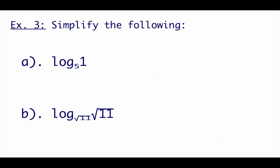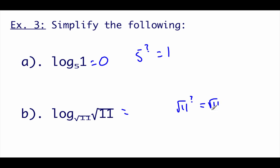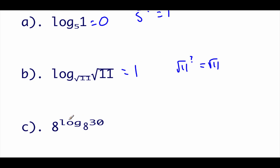Using a few of those properties: log base 5 of 1 equals 0, because any log of 1 is always 0 no matter the base. Log base square root of 11 of square root of 11 equals 1, since it's the first power. Next, using the inverse property, 8 raised to the power of log base 8 of 30 — those cancel out and all we have left is 30.